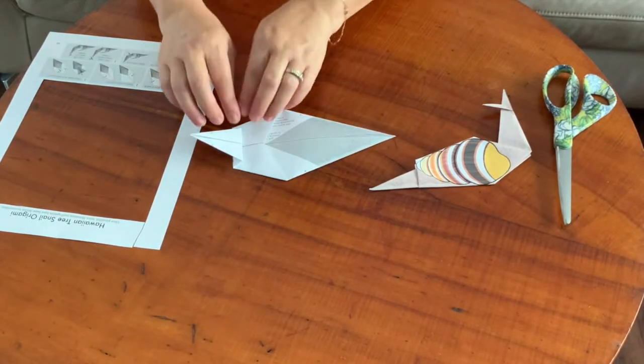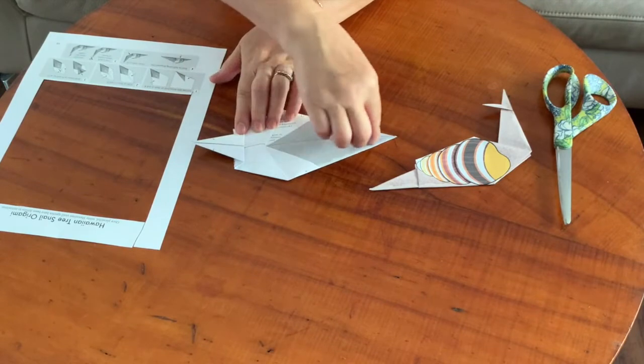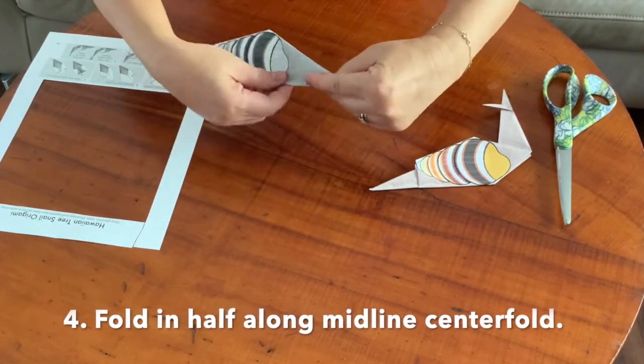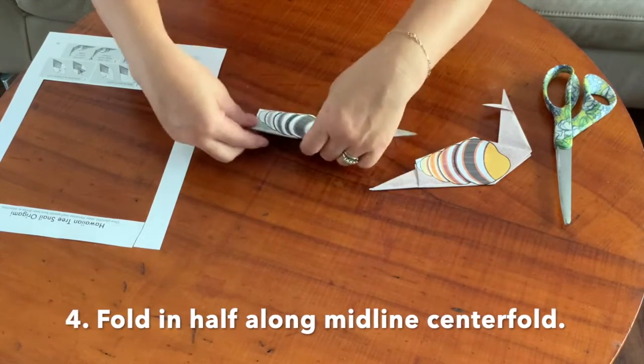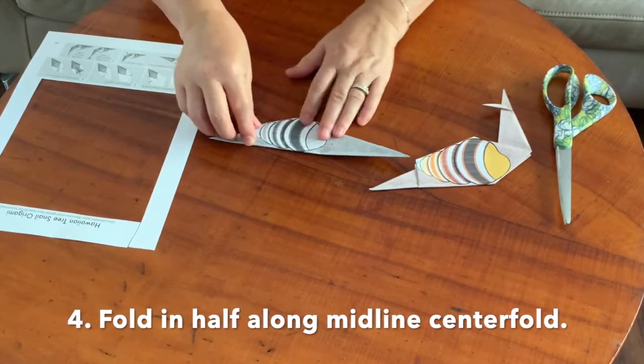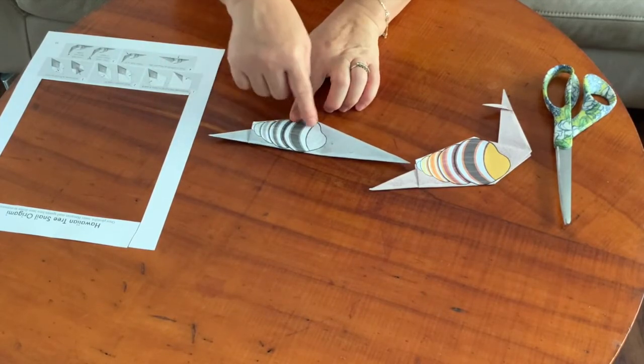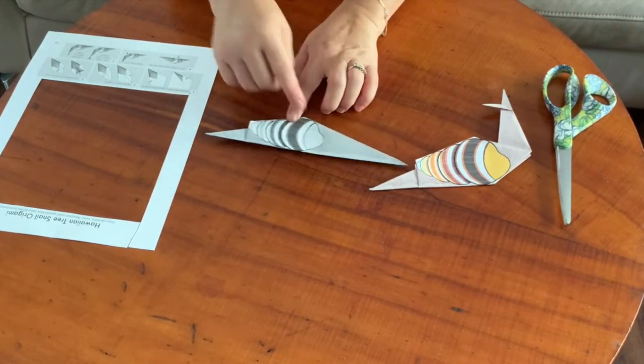The next step is to simply fold it in half along that center line. There you go. Now you can see the snail's body and the shell, and this part's going to be the head.